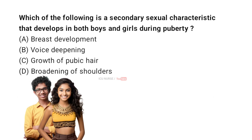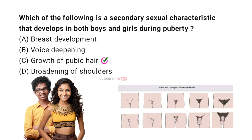Which of the following is a secondary sexual characteristic that develops in both boys and girls during puberty? A: Breast development, B: Voice deepening, C: Growth of pubic hair, D: Broadening of shoulders. The correct answer is C: Growth of pubic hair. Growth of pubic hair is a secondary sexual characteristic that occurs in both boys and girls during puberty as a result of hormonal changes.